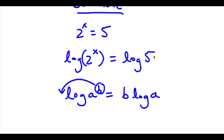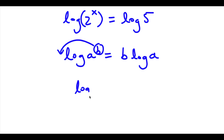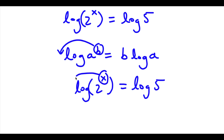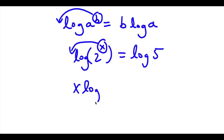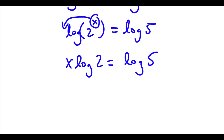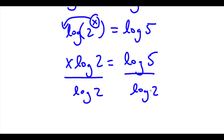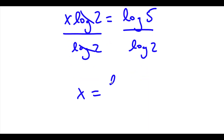So now we're going to use this property to make x a real term, and now it's going to be really easy to solve for x. From log 2 to the power of x is equal to log 5, by using this property I can move x to the front. So now I have x times log 2 is equal to log 5. Solving for x is really simple — all I have to do is divide by log 2 on both sides. These two cancel out and I'm left with x is equal to log 5 over log 2.